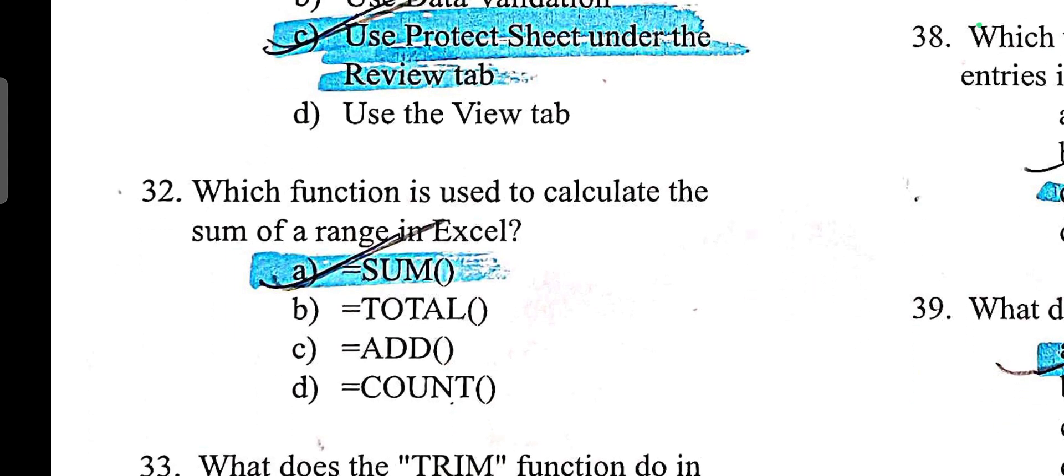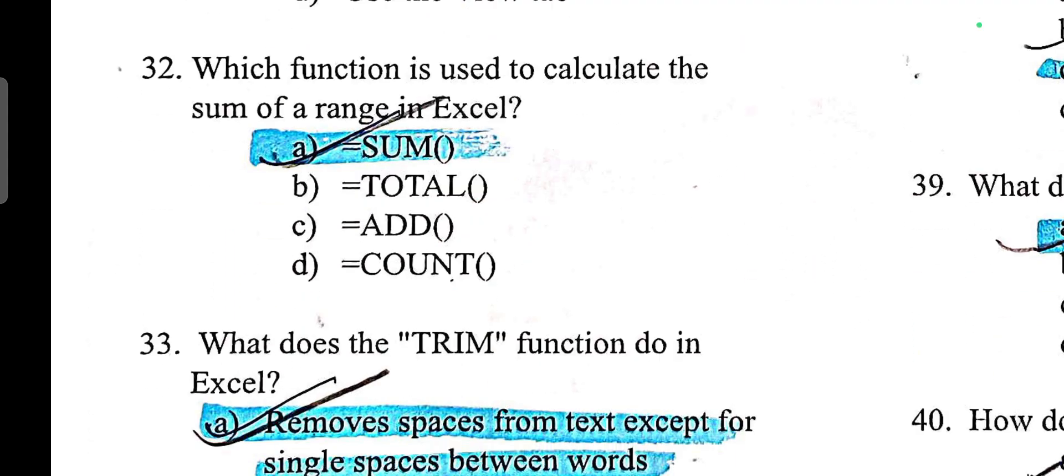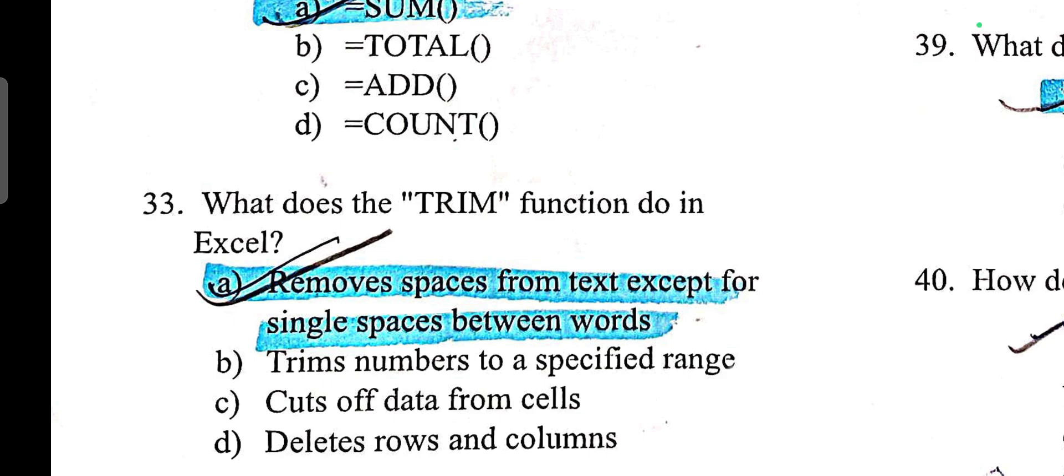Which function is used to calculate sum of range in Excel? Sum. What does the trim function do in Excel? Remove spaces from text except for single spaces between words. This is all practical. If you have a skill test, you have many questions. Last time CGL had all related questions. Then Excel functions are all related. We need to look at practical questions. We have a written test and skill test. We need to prepare for CGL. CGL 2023 means March, so if you have a skill test, you will be prepared.